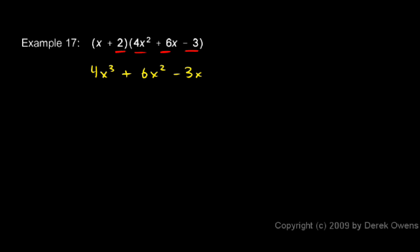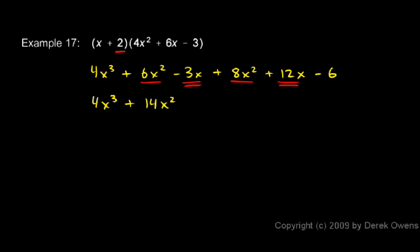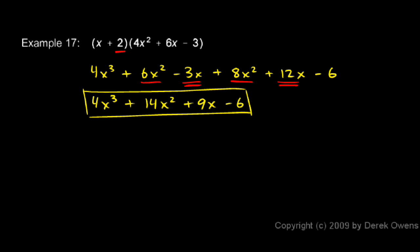Then I'll take the 2 and multiply it by each of those three terms. 2 times 4x squared gives me positive 8x squared. 2 times 6x gives me 12x. And 2 times negative 3 is negative 6. Then I combine like terms: 4x cubed. Here I have a 6x squared and an 8x squared — those combine to 14x squared. And I have a negative 3x and a 12x — I combine those and I get 9x. And then I have the minus 6. So the answer is 4x cubed plus 14x squared plus 9x minus 6.